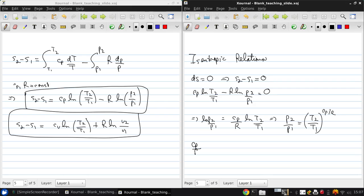But we can write cp over r another way. From one of our earlier equations, we have that that's gamma over gamma minus 1. So p2 over p1 is equal to t2 over t1 to the gamma over gamma minus 1.